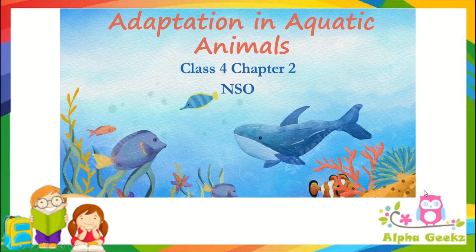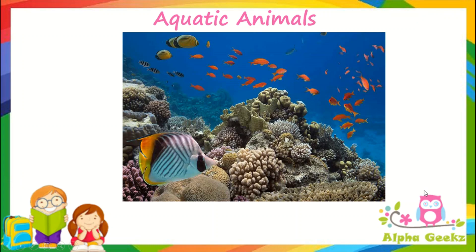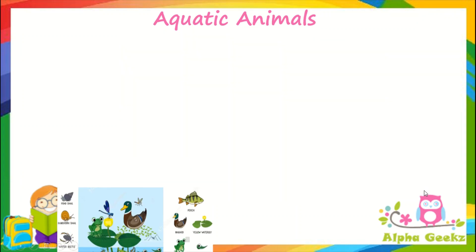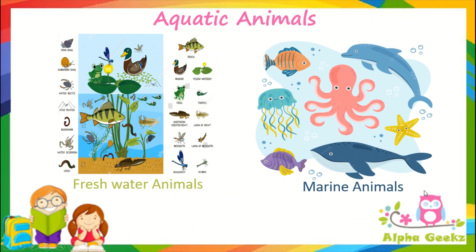Hello kids, welcome to Alpha Geeks. Let's continue with adaptation in aquatic animals. Aquatic animals are animals that live in water. Aquatic animals that live in ponds, rivers, and lakes are known as freshwater animals. Aquatic animals that live in oceans or seas are known as marine animals.